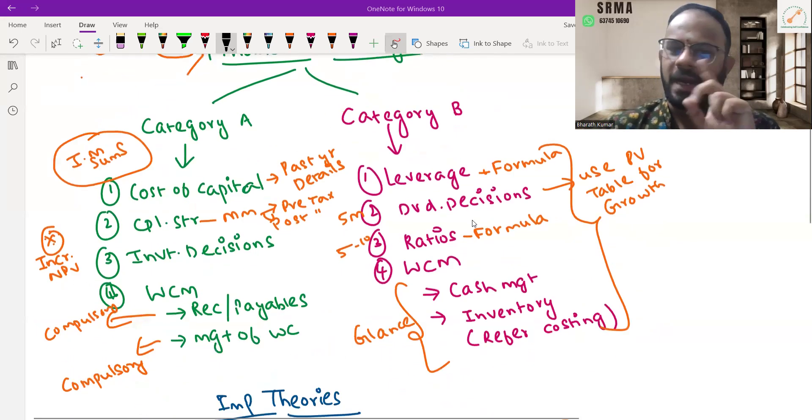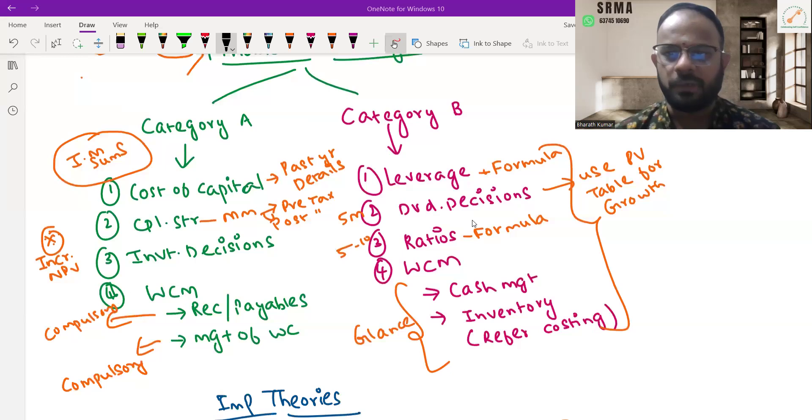Financial Management has two categories: Category A and Category B. Category A is the heavy portion which you should tackle first—eat the frog first. Focus on institute material, sums, examples, illustrations, and past year question papers. Category A includes cost of capital, capital structure, investment decision, working capital management, receivables and payables.